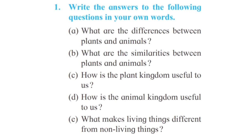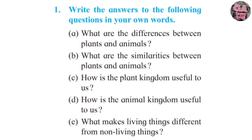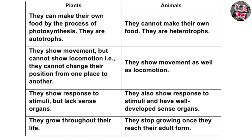Question number one: Write the answers to the following questions in your own words. A. What are the differences between plants and animals? Make two columns to write their differences — in the first column write 'Plants,' and in the second column write 'Animals.'